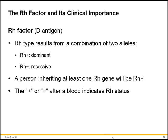What's the clinical importance of the Rh factor? The Rh factor, also called the D antigen, results from a combination of two alleles — one from your mother and one from your father. The Rh factor is dominant, so if you have even one Rh gene you are Rh positive. There are really eight blood types, not just four: positive and negative for each ABO type, and the plus or minus after the blood type indicates Rh status.